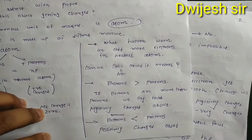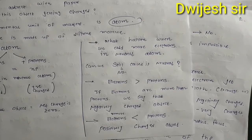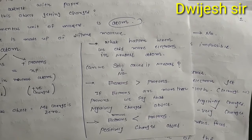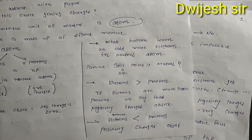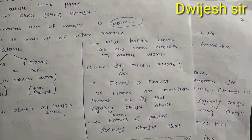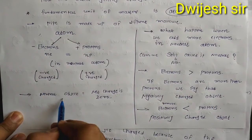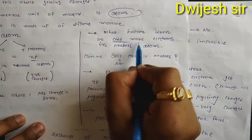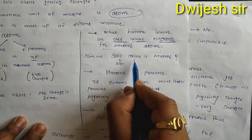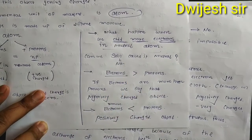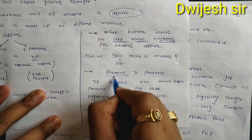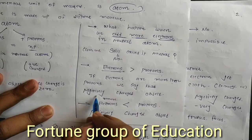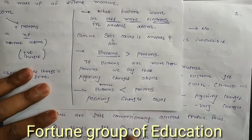What happens when we add more electrons to a neutral atom? Can we still call it a neutral atom? The answer is no, because in the neutral atom the number of electrons equals the number of protons. But when we add more electrons, the number of electrons becomes greater than the number of protons, so that gives us a negatively charged object.